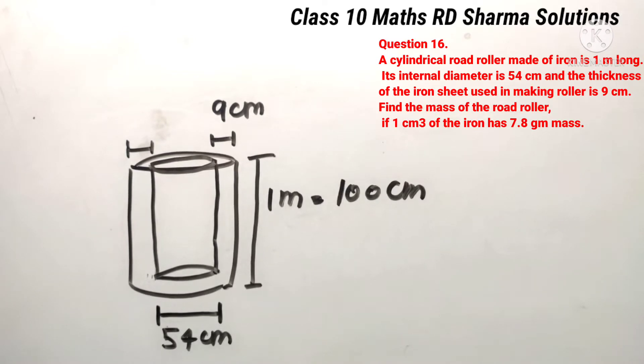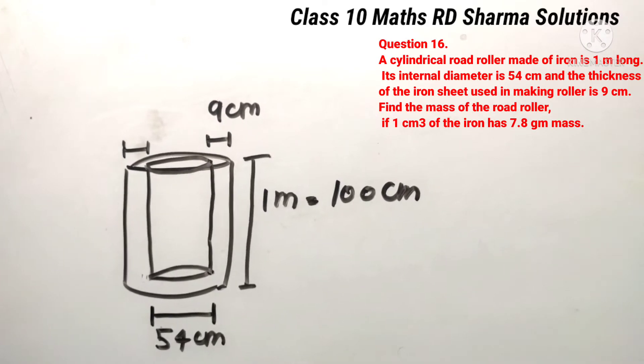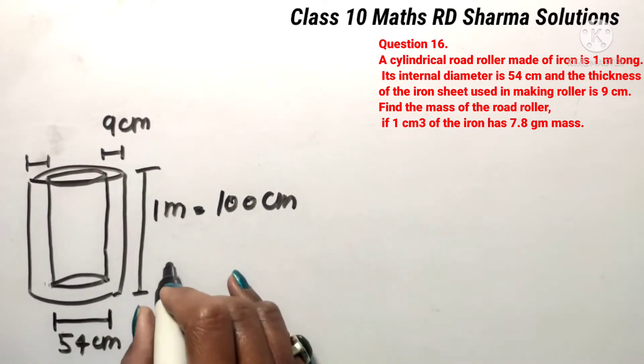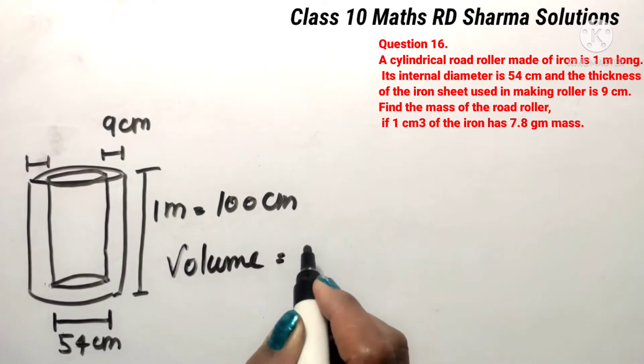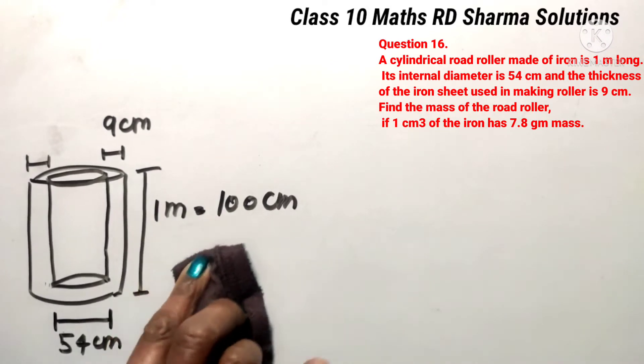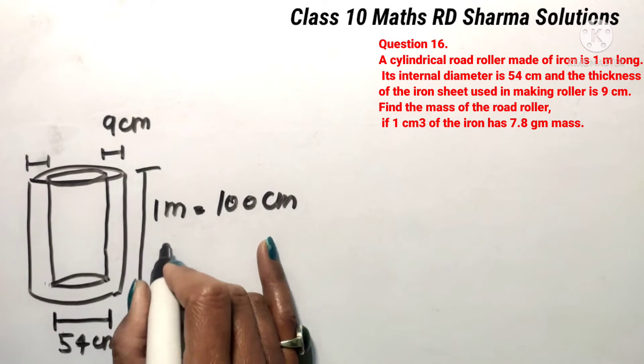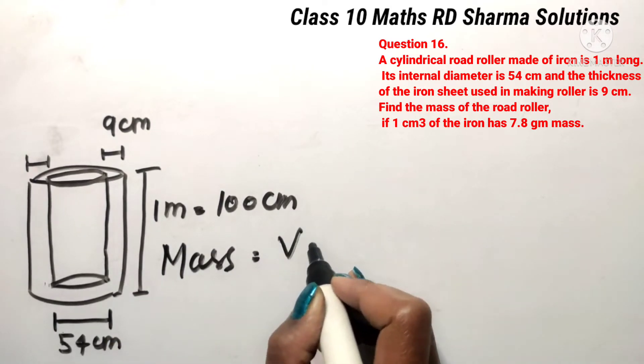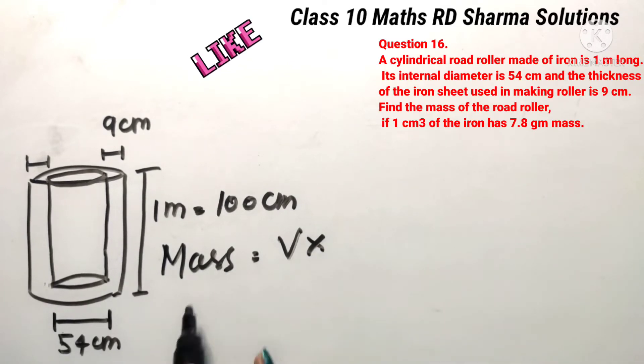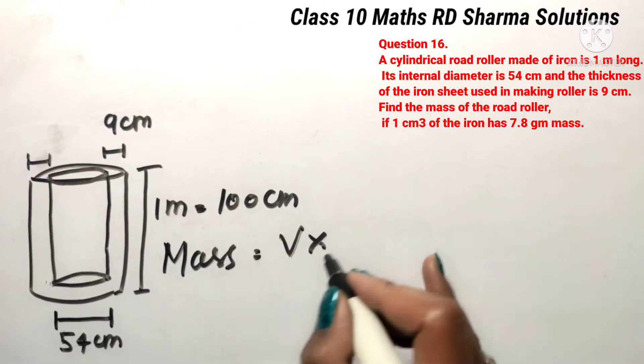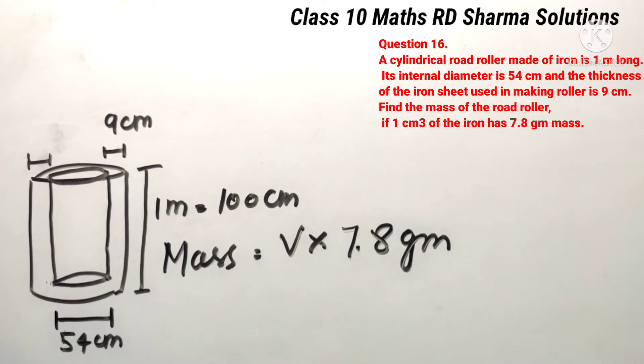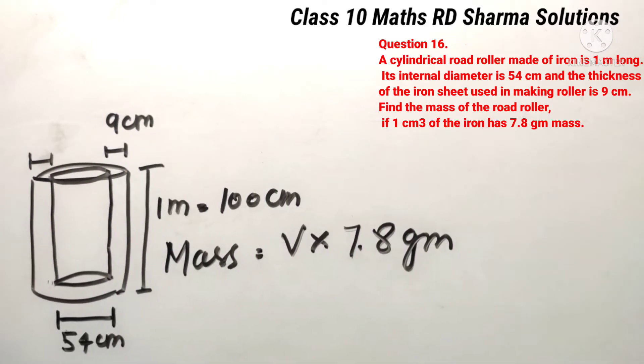Now, our question is about the mass of the road roller. So, we need to know the thickness to calculate the mass. So, let's write that the mass formula. For the mass, we need the volume. We need to multiply the volume by the mass per gram, so per centimeter cube is 7.8 grams, so we need to write here 7.8 grams.